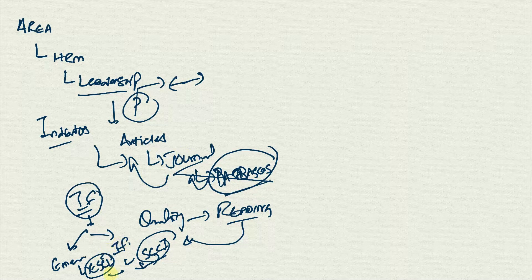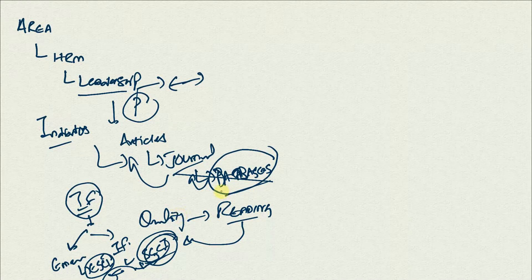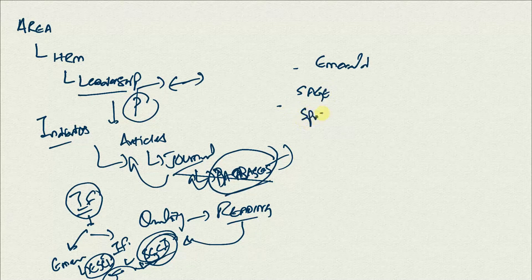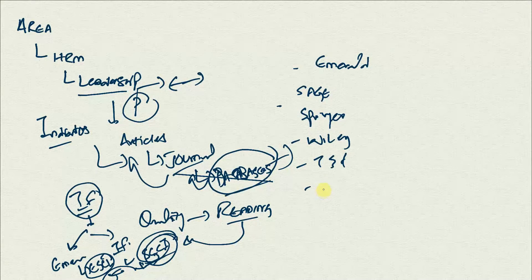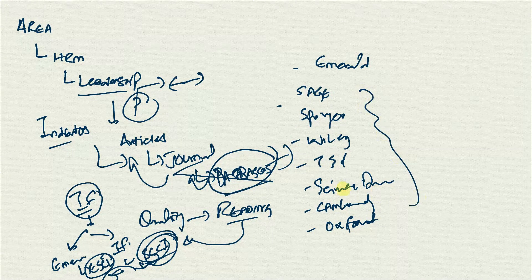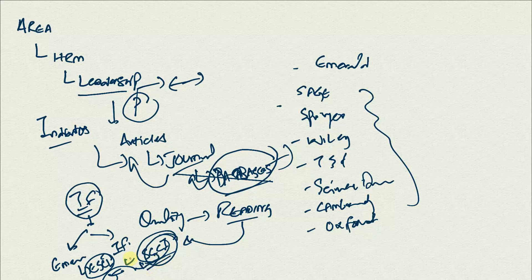I only recommend reading from these journals. How do I find out if a journal is emerging or in the Social Sciences Citation Index, and what are these databases? There are different databases: there is Emerald, there is Sage, there is Springer, there is Wiley, there is Taylor and Francis, there is ScienceDirect, there is Cambridge, Oxford — the list is not exhaustive, there could be others as well.